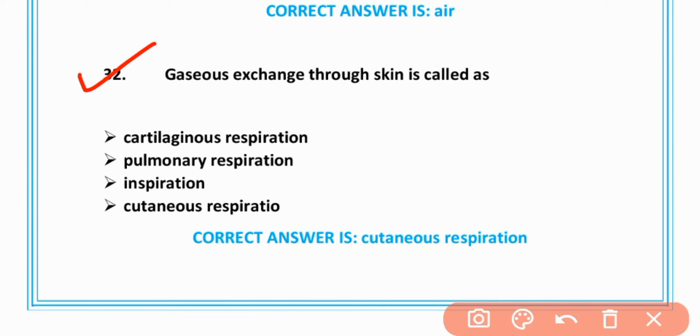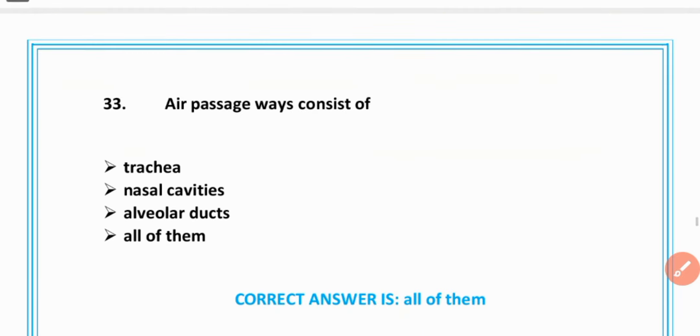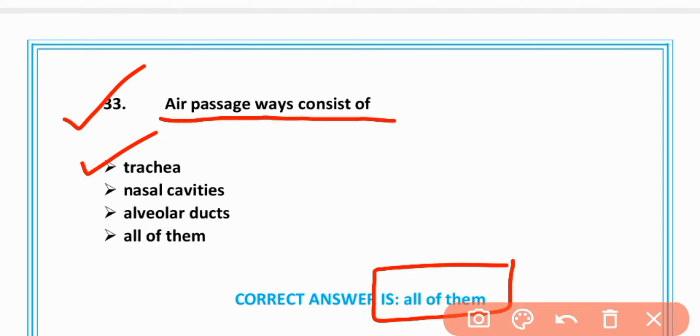MCQ number 32: Gas exchange through skin is called cutaneous respiration, D is correct. MCQ number 33: Air passageways consist of all of them - trachea, nasal cavity, alveolar ducts, option D is correct.